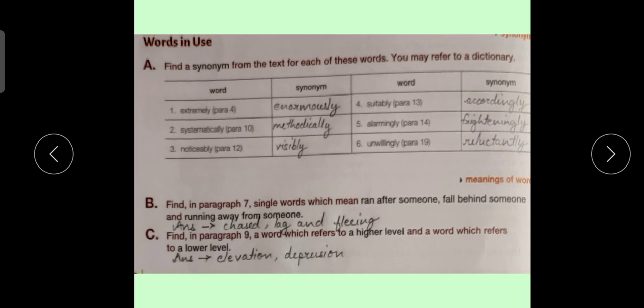Exercise A. Words in Use. Find a synonym from the text for each of these words. You may refer to a dictionary. Dear students, this exercise is asking us to provide synonyms from the text. We can also use dictionary, but they have asked us to find out synonyms from our text. That means we have to go through the lesson to find out synonyms for these words. Word number 1. Extremely. Synonym is enormously.